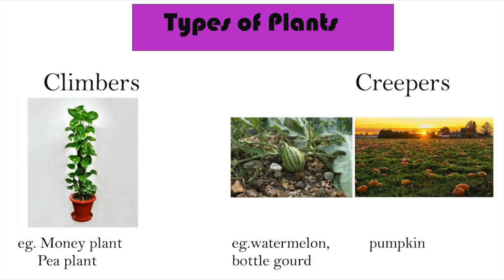Climbers are soft plants with weak stems that need support to climb. For example, money plant and pea plant. Creepers have weak stems and creep along the ground, like watermelon, pumpkin and bottle gourd.